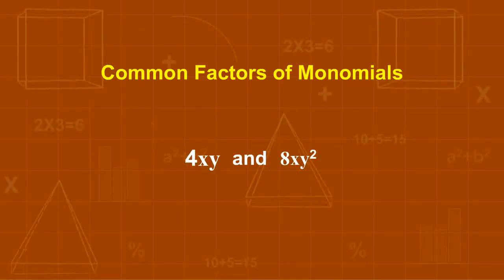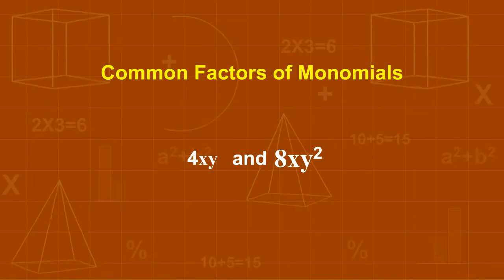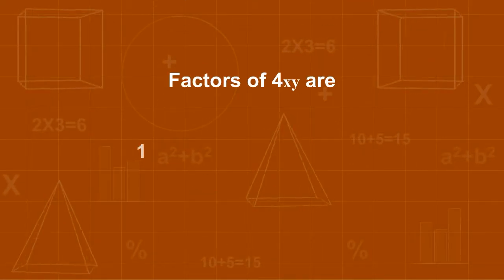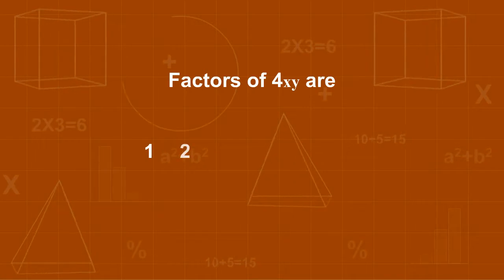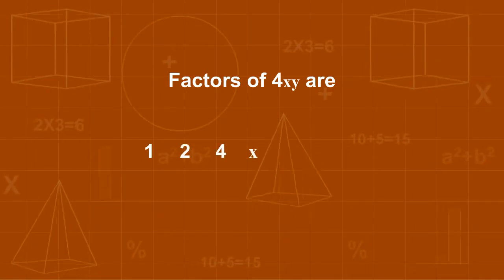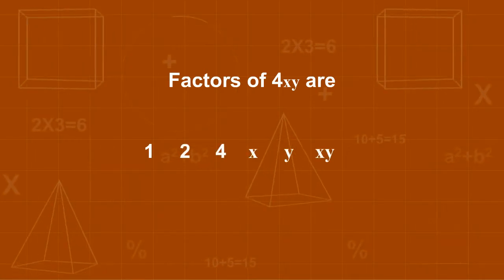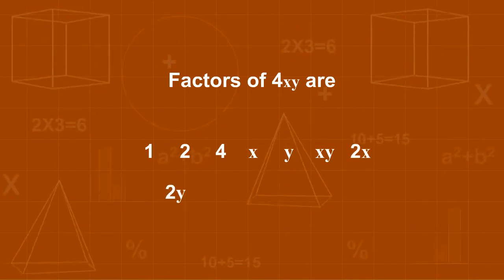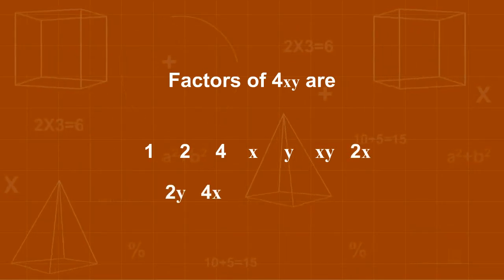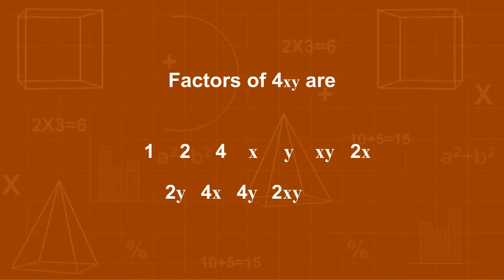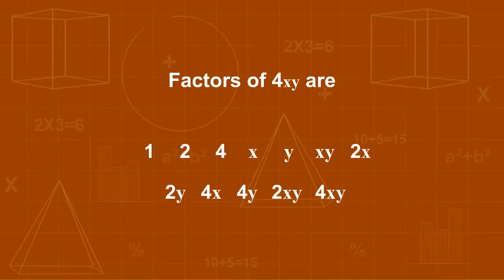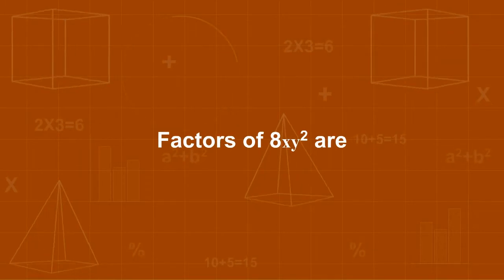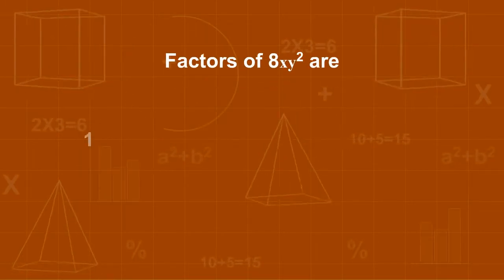Common factors of monomials. If we consider the two monomials 4xy and 8xy², the factors of 4xy are: 1, 2, 4, x, y, 2x, 2y, 4x, 4y, 2xy, and 4xy.